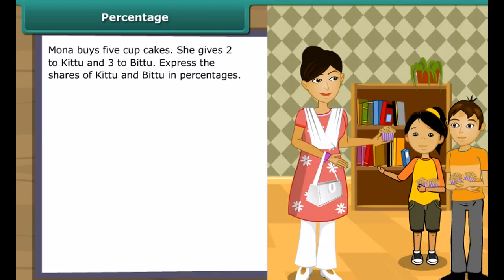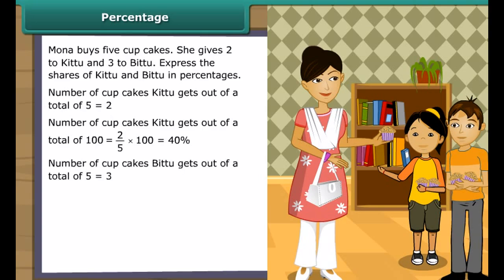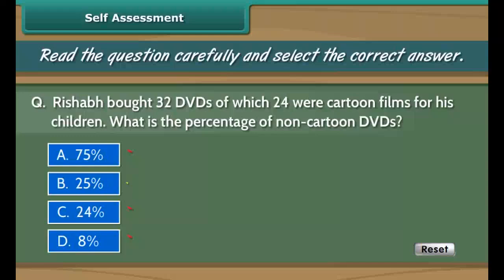Mona buys 5 cupcakes. She gives 2 to Kittu and 3 to Bittu. Express the shares of Kittu and Bittu in percentages. Kittu gets 2 out of 5, so out of 100 that is 2/5 into 100, which equals 40%. Bittu gets 3 out of 5, so out of 100 that is 3/5 into 100, which equals 60%. The sum of percentages equals 100%, representing the whole.